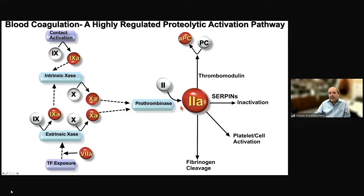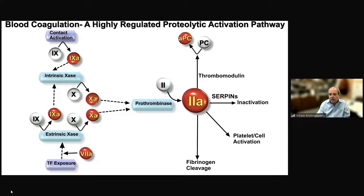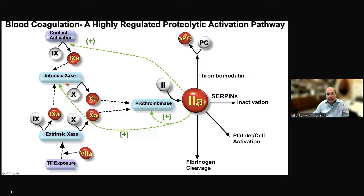This cascade arrangement was initially proposed by Earl Davy and Oscar Ratnov in 1964 or 1965. Some of the details have changed, but the basic picture has held. Thrombin is the key product of clotting because it can convert fibrinogen to fibrin and activate platelets — essential components of the clot. But thrombin is also a key regulatory agent, because early in its production it can rapidly feed back and activate two cofactors, 5 and 8, which are essential elements of the enzyme complexes.